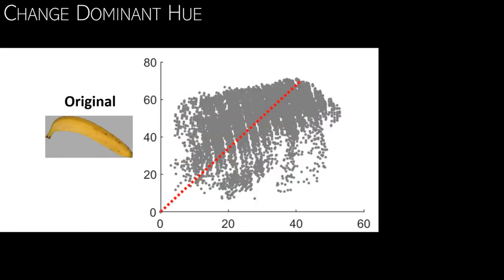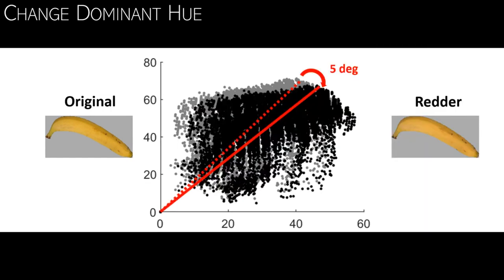Here you see the original distribution in gray. The red line indicates the dominant hue as a reference. And the new black dots here are the same as the gray dots in the background. The only difference is that the black dots are all rotated by five degrees, resulting in a banana that is slightly redder than the original there on the right side. The red lines are only there to give a better impression of the size of the rotation. The image on the right corresponds to the distributions of the black dots in the center.